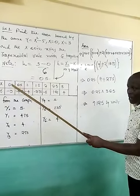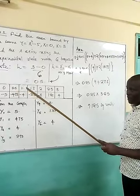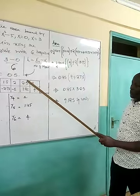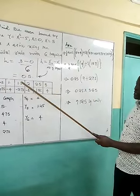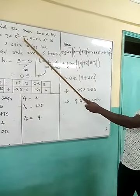So I'll add 0.5 to 0, I'll get 0.5, then I'll add 1, 1.5, 2, 2.5, and 3. When you substitute these values in the function y equals x squared minus 5, you'll obtain these values of y.